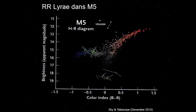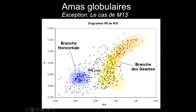Voici le diagramme HR de M5 dans le Sagittaire. On voit très bien les RR Lyrae qui apparaissent comme des lignes parce qu'elles changent constamment de luminosité. On voit aussi la branche des géantes. Dans M13, on a la branche des géantes, la branche horizontale et les RR Lyrae. Mais en regardant de plus près, on trouve quelque chose de bizarre : des étoiles bleues dans les amas globulaires. On n'aurait pas attendu ça — on ne cesse de dire depuis le début que ce sont de vieilles étoiles rouges de petite masse.